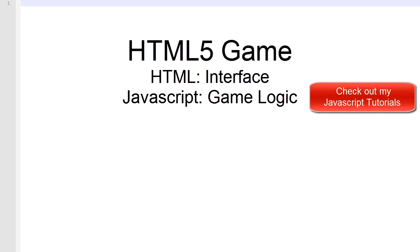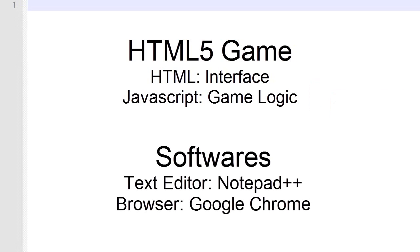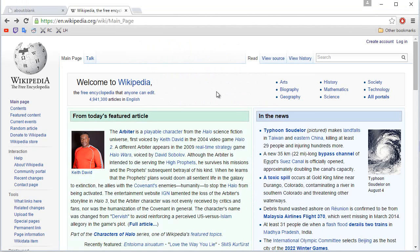If you're curious about JavaScript, you can check out my other YouTube series where I cover all the things you need to know about making game logic with JavaScript. In order to code in HTML5, you will need two software tools. The first one is a text editor — any text editor will do, but I highly recommend Notepad++. The second tool you will need is a browser, and I highly recommend Google Chrome.